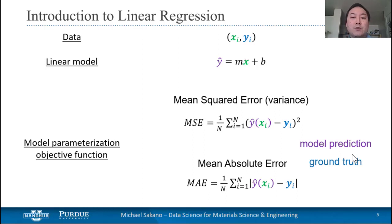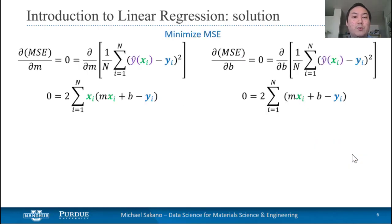Mean squared error is the average squared difference between the model prediction and the ground truth; this can also be thought of as the variance. On the other hand, mean absolute error is just the average absolute difference between the prediction and the ground truth. In order to optimize our slope and y-intercept, we need to take the derivative with respect to the two parameters for our MSE and set those derivatives equal to zero.